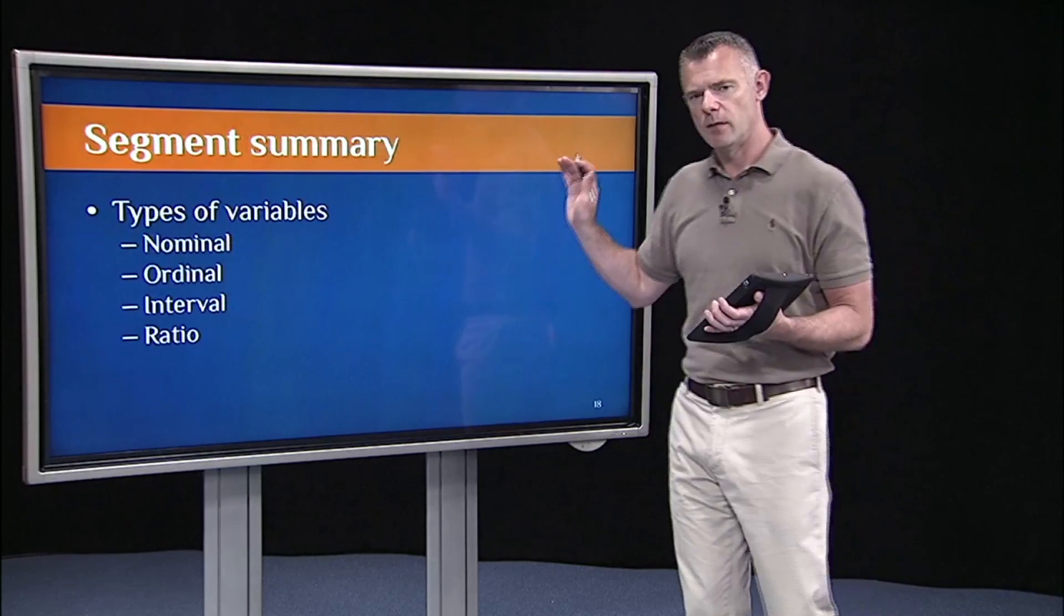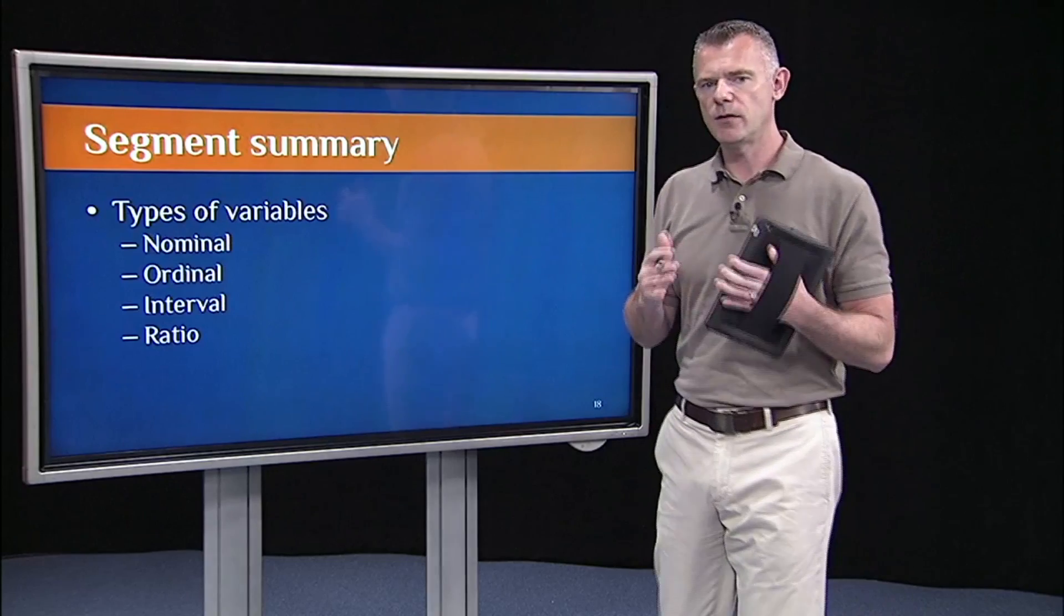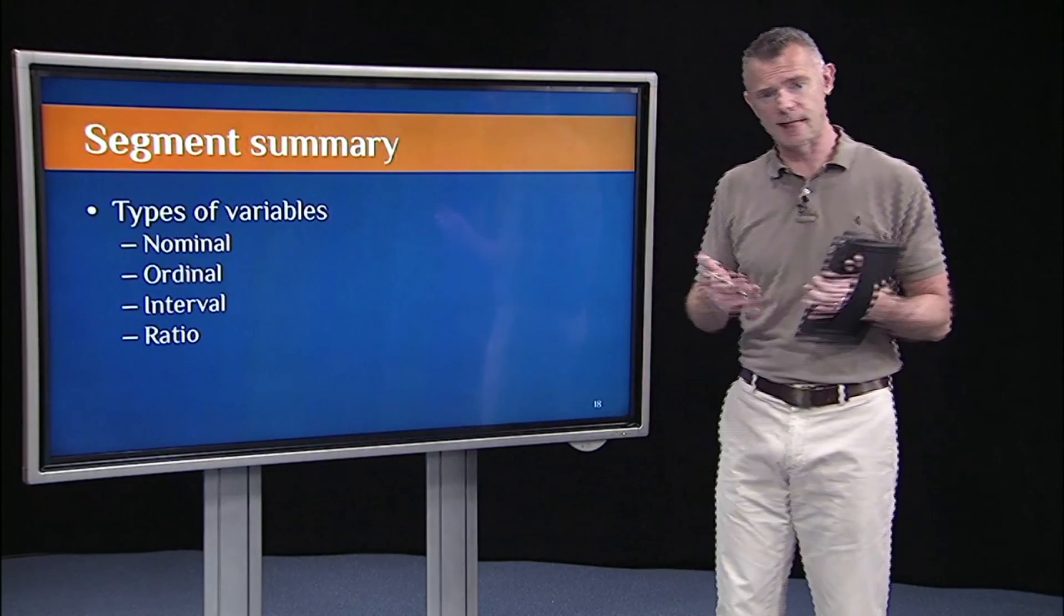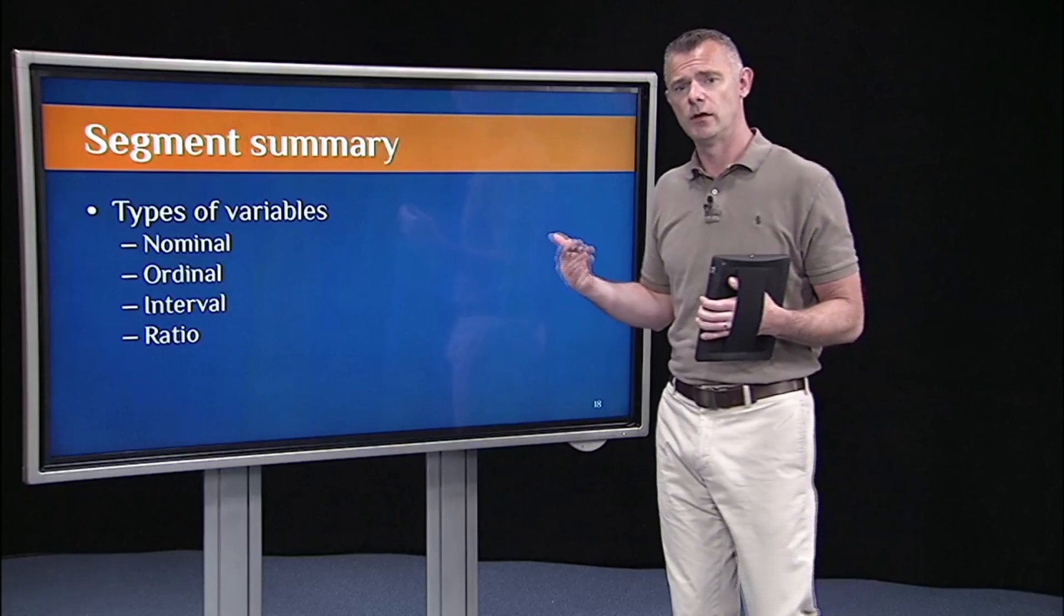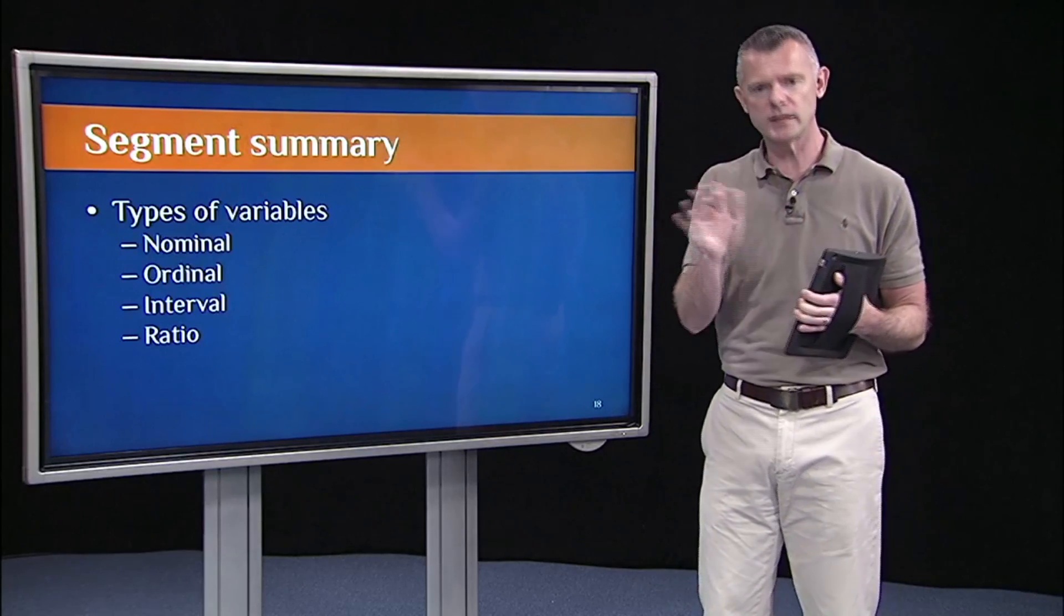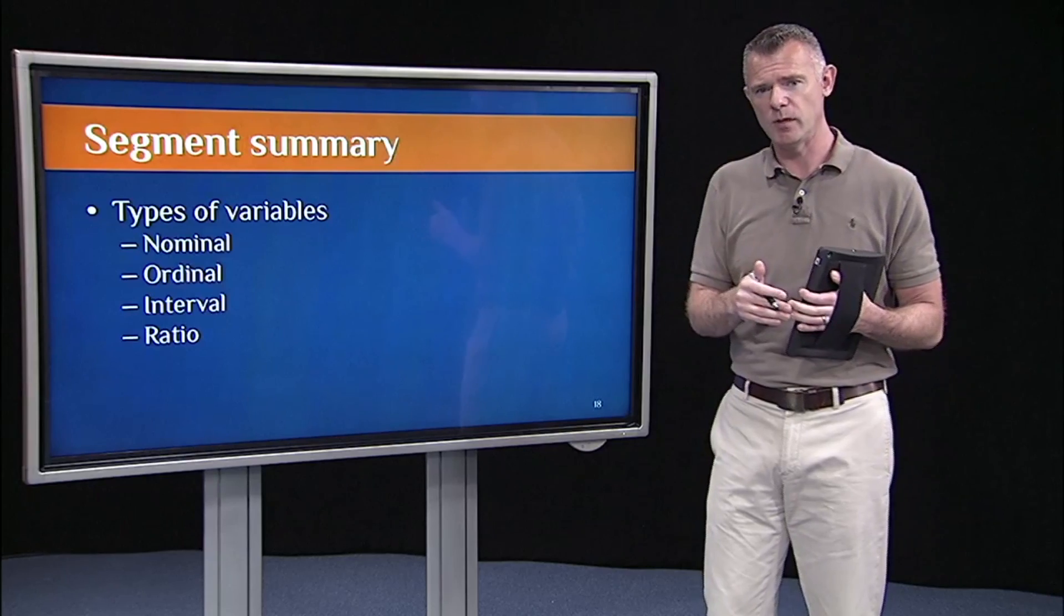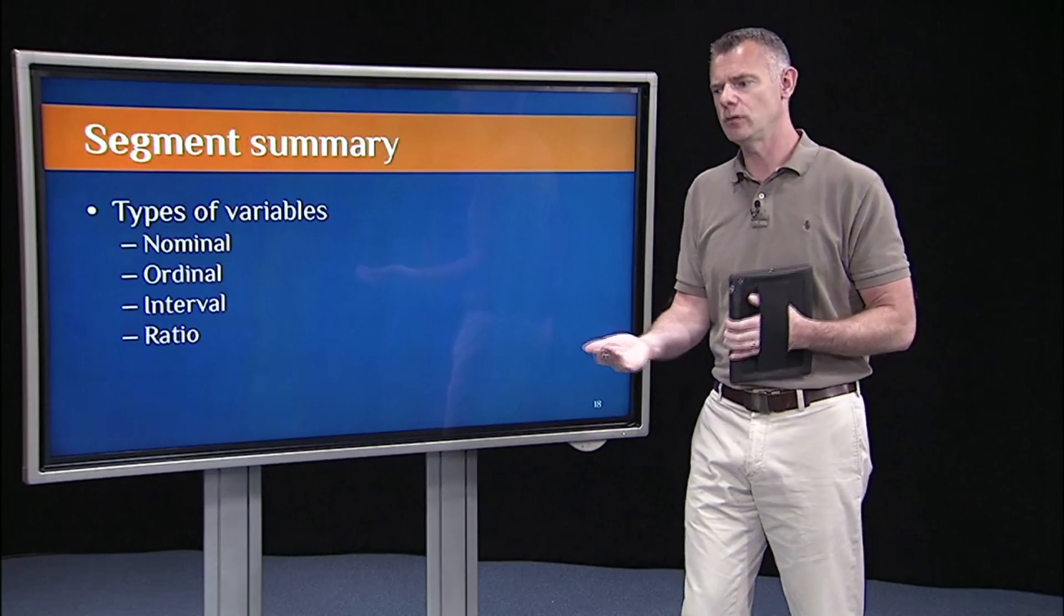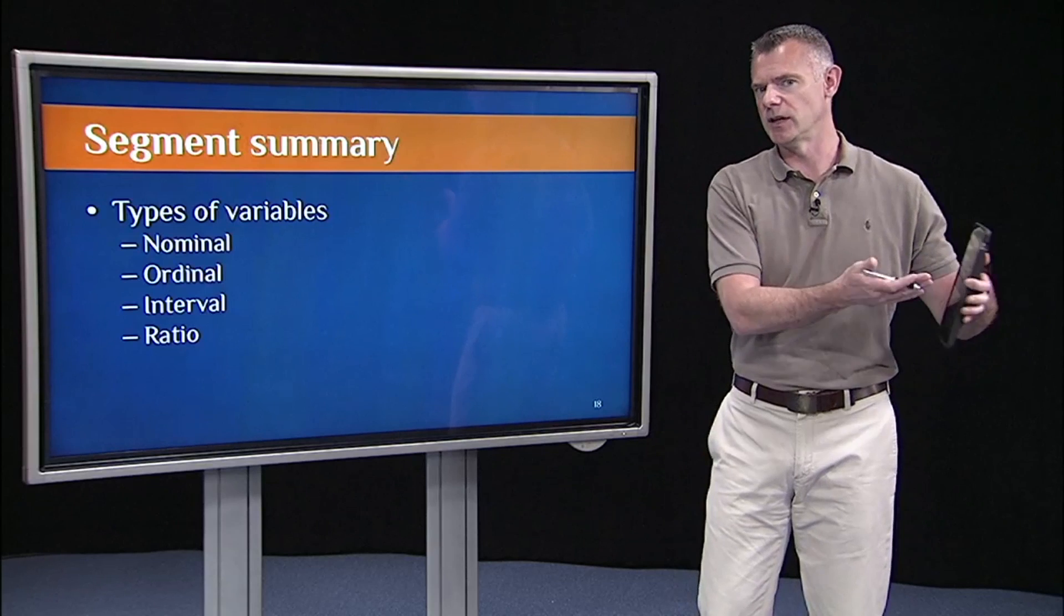So to sum up this segment, the main point is that there are different types of variables that we're going to use throughout the course and that statisticians use to do their research. And it's really important at the outset that you always know what type of variable you're dealing with because you can only apply certain statistical procedures to variables of certain types.